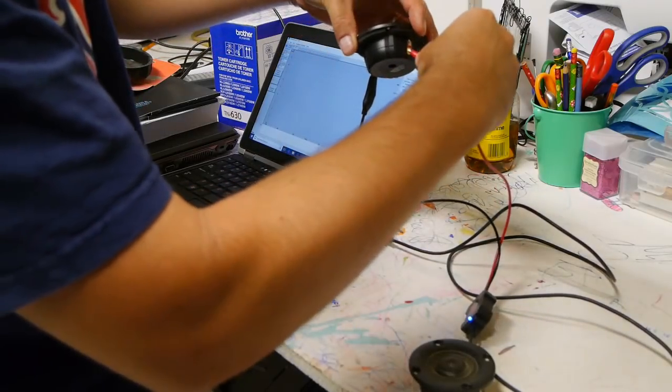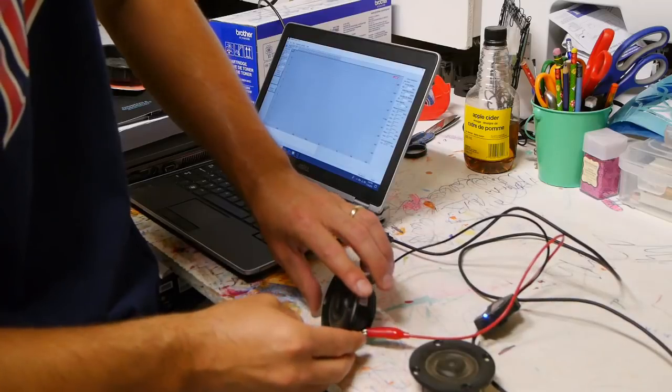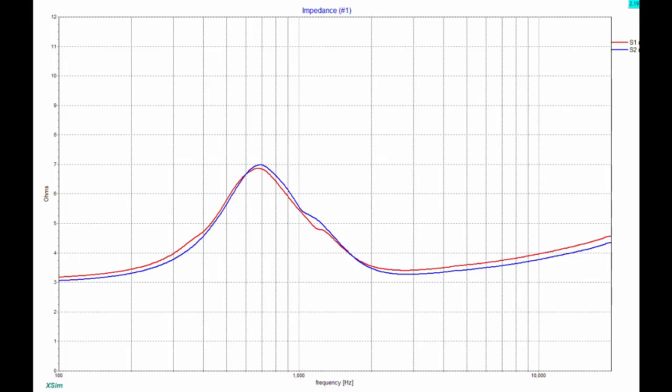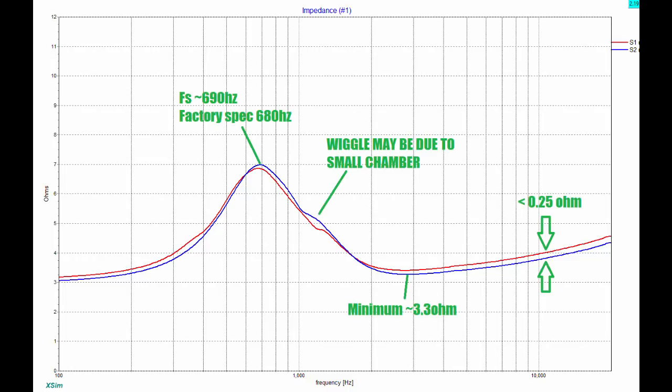I did impedance testing because if you're going to use these files to design a passive crossover you need the impedance results. It also tells us a little bit about the tweeter. We can see a little bit of a mismatch. Sample one is the higher impedance, that is the red line. It's possible that's where the sensitivity difference comes from. You can see a little bit of a wiggle at about 11 or 1200 hertz. This is in the factory measurements as well and likely due to the fact that it's got a small chamber - it's the neo version. The resonance frequency fs is about 690 hertz, which is really close to the factory spec of 680 hertz.